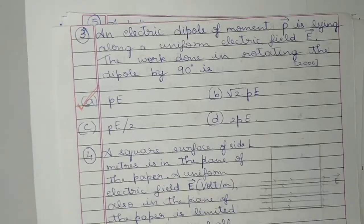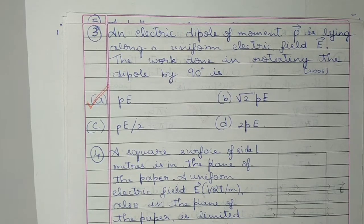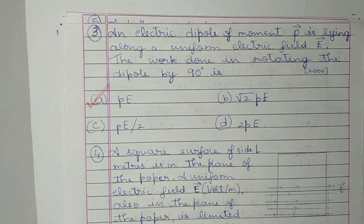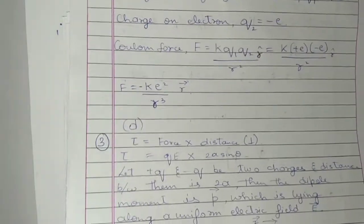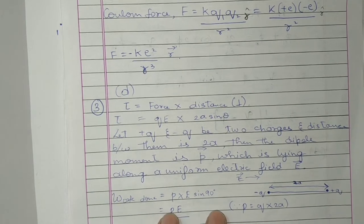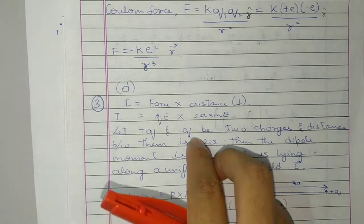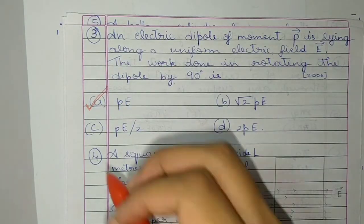Question 3: An electric dipole of moment P is lying along a uniform electric field E. The work done in rotating the dipole by 90 degrees is — the work done is given by PE sin θ, and θ is 90 degrees, therefore it is PE. Option A.